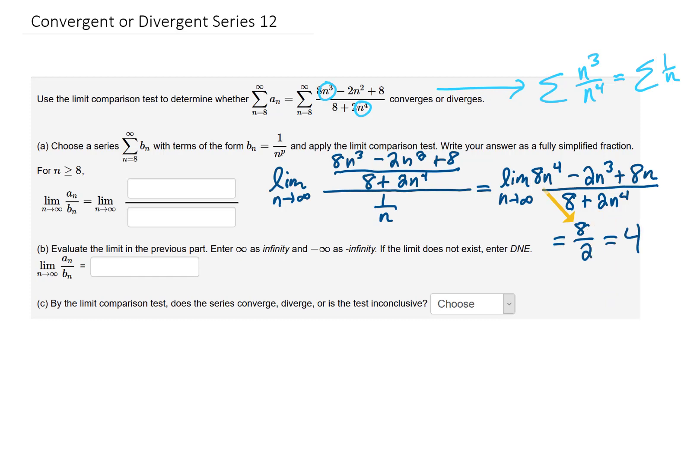So if we're actually answering these questions, to me it makes the most sense for 8n to the fourth minus 2n cubed plus 8n to be here, and it makes sense for 8 plus 2n to the fourth to be here. Then we take our limit and we get 4.